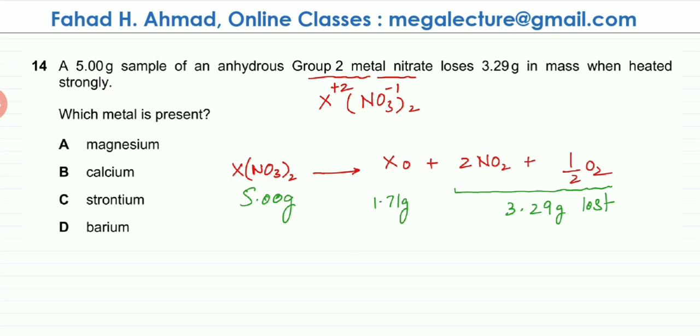Now how do you solve this question? One way is to use the trial and error method - use X as magnesium and figure out whether this data is correct if it's magnesium. If you decompose 5 grams of magnesium, would you get this much metal oxide and this much NO2 and O2? But that is very time consuming.